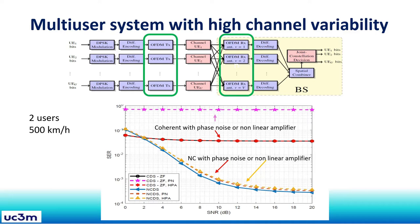This is an example of the performance of a multi-user system with high channel variability. We can see two curves where the symbol error rate does not decrease much, which correspond to coherent with phase noise or a non-linear amplifier, where the two users move at a speed of 500 km per hour. Then we have the non-coherent with phase noise or a non-linear amplifier, where increasing the SNR results in a decreasing symbol error rate.